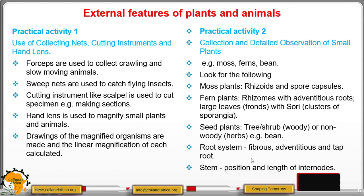So you have also to look at what you call the stem. Then in the stem you look at the position and the length of the internodes. So the internodes are those places where we have the branches emerging from. So those small tiny parts that are very delicate that eventually become branches are what we are calling the internodes. So you have to look at their length and even their positions.